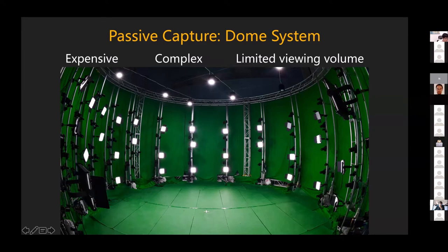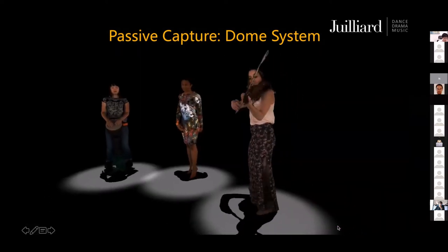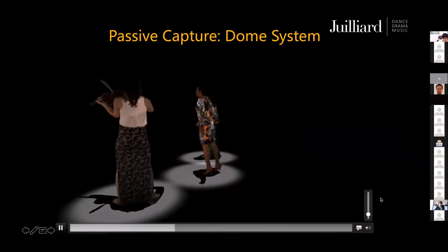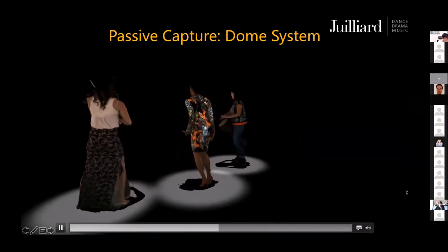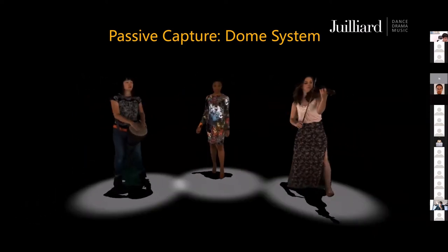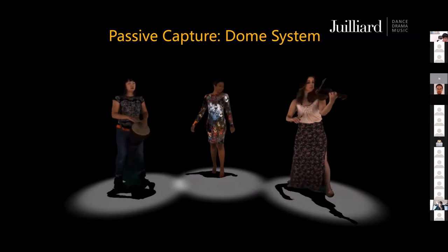We worked with the Juilliard School in New York City. We captured performers — a drummer, a violinist, a singer. You can see the initial reconstruction looks just okay. There are all kinds of visual artifacts caused by lack of textures, caused by heavy occlusion, etc. This is actually very common in structure-from-motion type solutions.